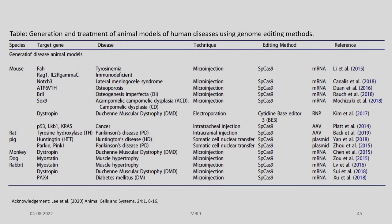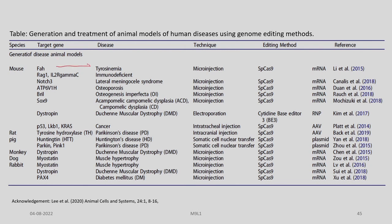This table provides an overview of the generation and treatment of animal models of human diseases using genome editing methods, covering various species. It addresses the generation of disease animal models across species including mouse, rat, pig, monkey, dog, and rabbit. Certain genes are targeted to create specific disease models, depending on the type of disease for which the model is being developed.